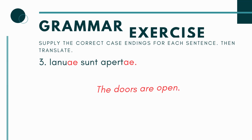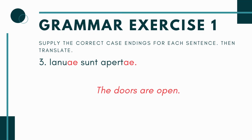Number 3: 'ianua___ sunt aperta___.' The same thing is happening: since we have sunt, it needs to be ianuae — the doors — and aperta needs to be apertae — open. They need to be plural because sunt is plural, so you're saying: the doors are open. That's why we have the -ae endings on both.